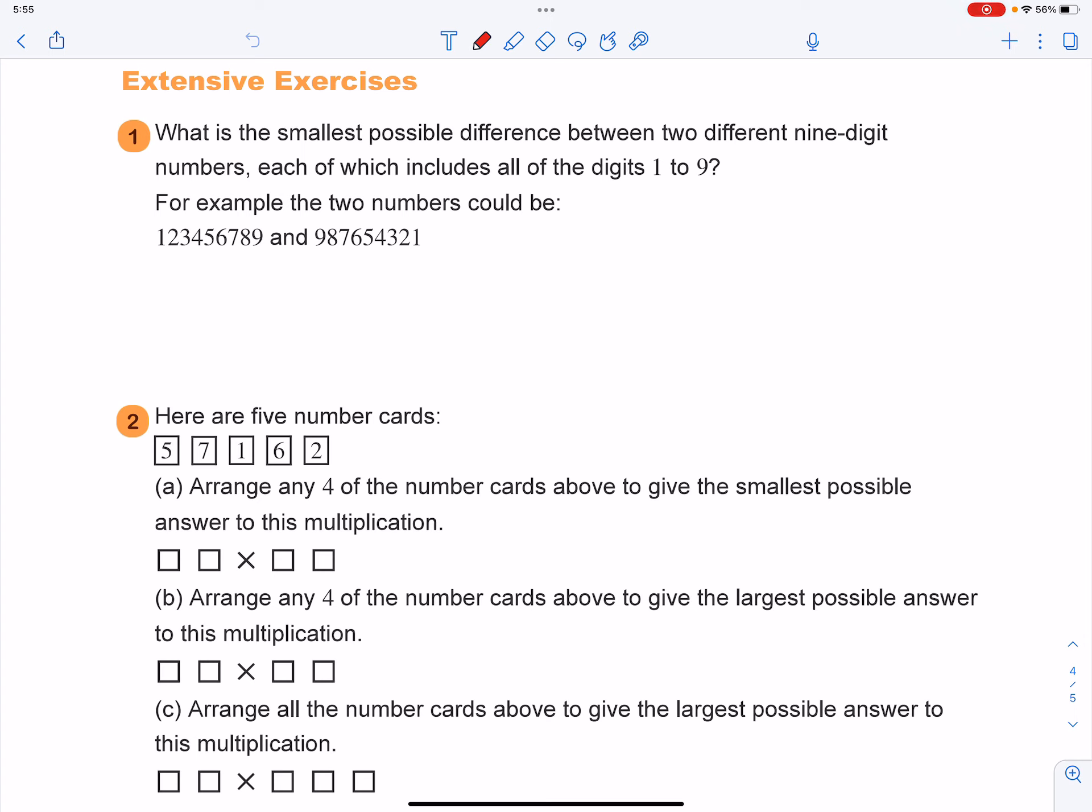So if you want to get the smallest difference, the two numbers should be as close as possible, and we have nine-digit numbers. So that means, as for the highest digit, we can make them the same, and for the second one, we can make it the same as well.